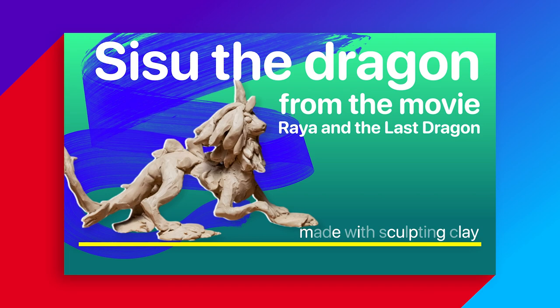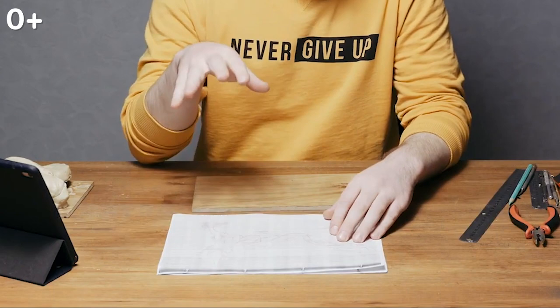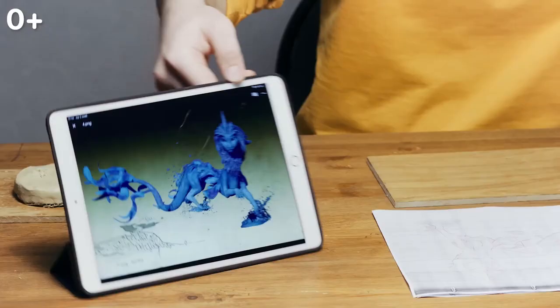Before sculpting any character, print out a picture of the character on a sheet of paper. I have other pictures on my tablet from different angles.